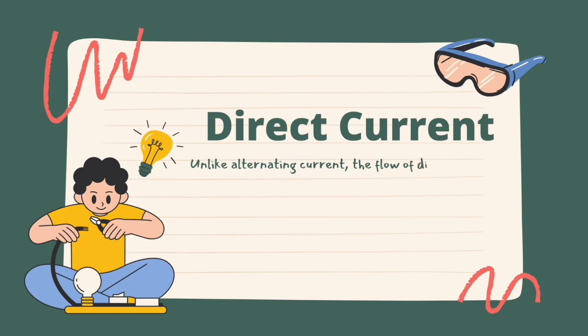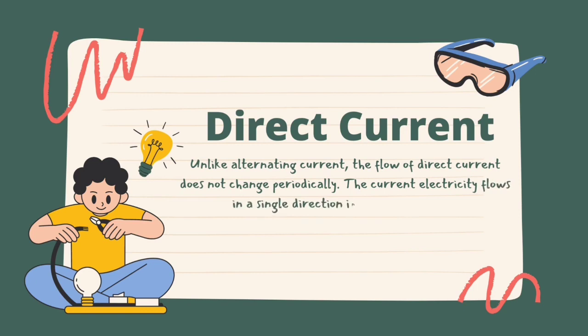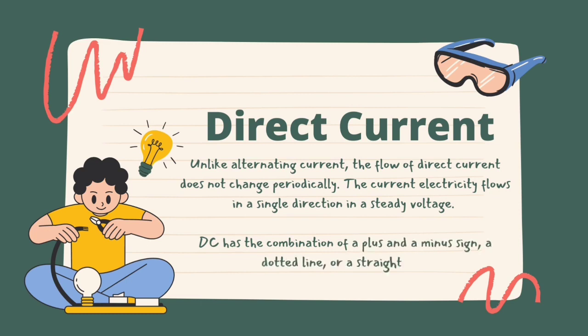AC is capable of powering electric motors which are used in refrigerators, washing machines, etc. Unlike alternating current, the flow of direct current does not change periodically. The current flows in a single direction at a very steady voltage. The major use of DC is to supply power to electrical devices and also to charge batteries. DC has a combination of a plus and a minus sign, a dotted line or a straight line.